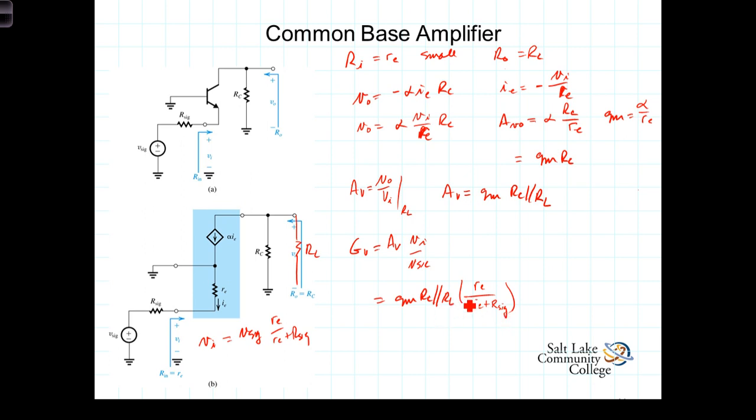We can simplify this by recognizing that alpha equals G-sub-M times R-sub-E. We can replace that with alpha, and we get alpha times R-sub-C parallel R-sub-L divided by R-sub-E plus R-sig. And it's interesting to note that since alpha is typically pretty close to 1, the overall voltage gain G-sub-V equals the ratio of the total resistance at the output R-sub-L parallel R-sub-C and the total resistance at the input R-sig plus R-sub-E.